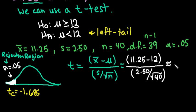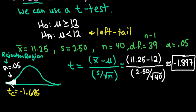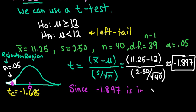Our computed t value is -1.897. Now we compare this to our rejection region. Think of it as a number line: values to the right of -1.685 are larger than that cutoff. Since -1.897 falls to the left of -1.685, it falls in the rejection region. So since -1.897 is in the rejection region, we reject our null hypothesis.